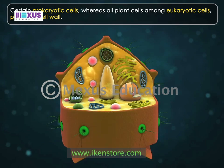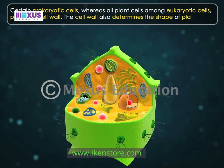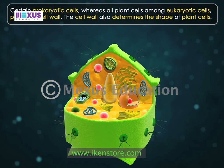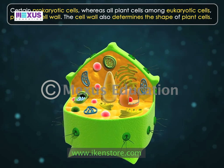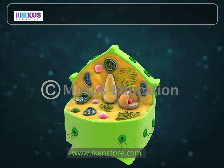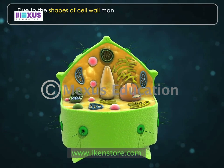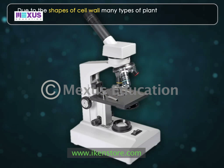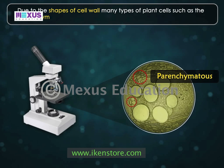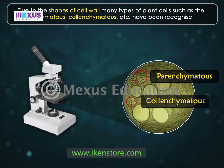The cell wall also determines the shape of plant cells. Due to the shapes of cell wall, many types of plant cells, such as the parenchymatous, collenchymatous, etc., have been recognized.